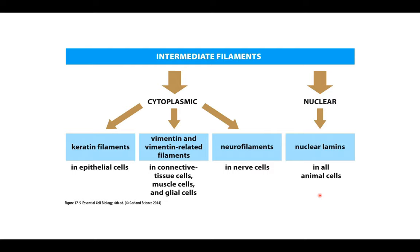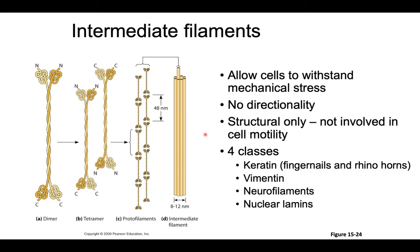We're going to start with information on intermediate filaments. There are kind of two main flavors — lots of them in the cytoplasm, and very specific kinds in the nucleus. The ones in the nucleus are called nuclear lamins, which contribute to the structure of the nucleus. Then there are a few different types of cytoplasmic filaments. One of the biggest groups is keratin, found in a lot of epithelial cells — it contributes to our nails and hair. There are also vimentin and vimentin-related filaments found in connective-type tissues like muscle and glia, and a specific flavor found in nerve cells.